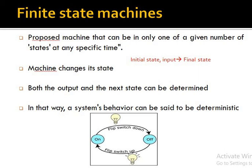If we know the input and can determine the next state, we can create a finite state machine diagram. A system's behavior can be said to be deterministic — we can determine the output. For example, if a switch is in off state and I put it to on state, the next state of the system will be on. The output will be determined. This is a deterministic system — we can determine the behavior.